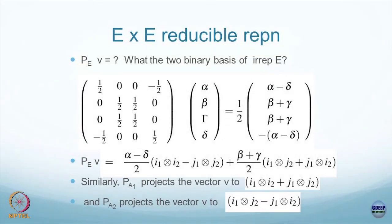Let us start as a warm-up. We have gone through tensor product. This should be the tensor product of E×E by E×E. E is a two-dimensional irreducible representation. I am taking a tensor product of two-dimensional irreducible representation with basis states i1 and j1, and this second E with basis states i2 and j2.